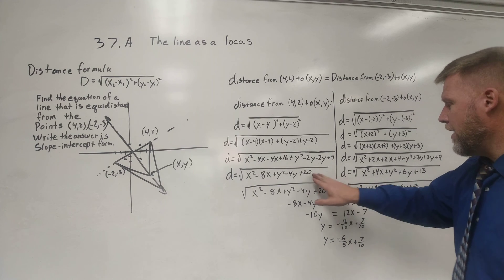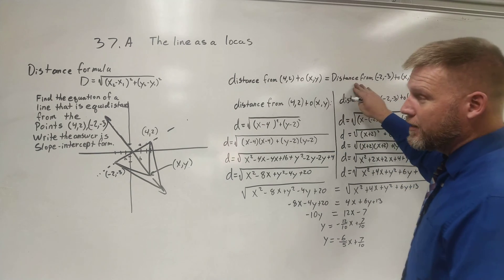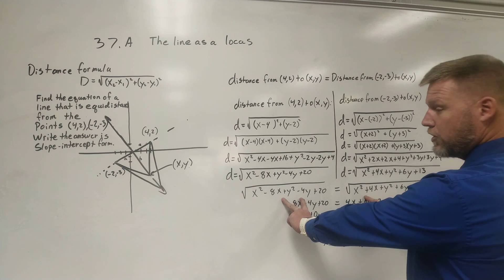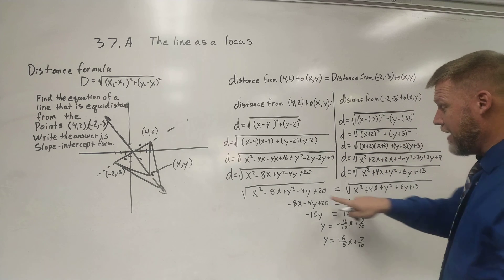Now, at this point, I have a distance equals and a distance equals. But remember where we started, we said the distance from one is the same as the distance from the other. So I can really just set them equal to each other. And there's where an equal sign here. So I took the two sides of the problem. And I combined them.